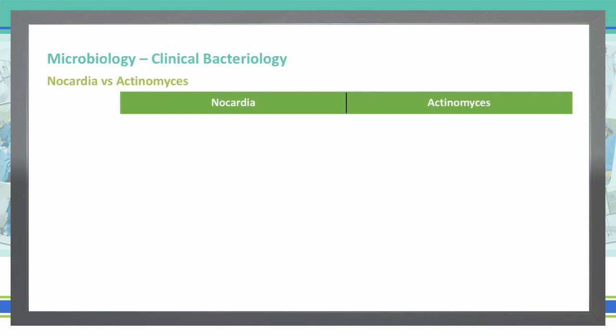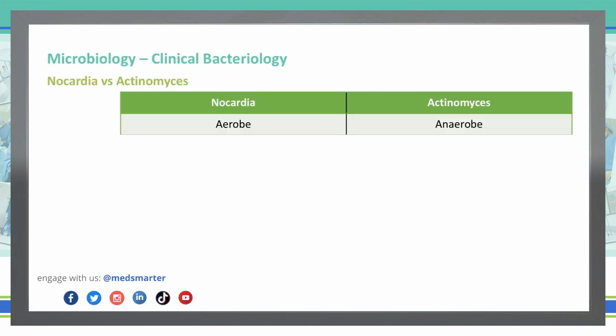We're going to compare and contrast them in a chart. Nocardia is an aerobic bacteria, whereas Actinomyces is an anaerobic bacteria. Therefore Nocardia loves being in the presence of oxygen, whereas Actinomyces functions better without oxygen.